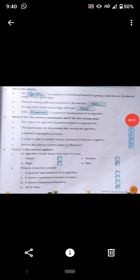Good morning students, today we will discuss and complete your exercise of chapter number 4, algorithm and flowchart. The first is fill in the blanks. Part A: An algorithm is a sequence of activity prepared for getting a task done or the desired output from the given input.